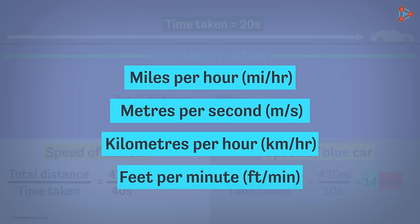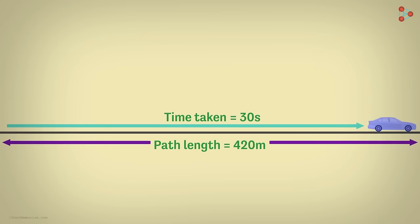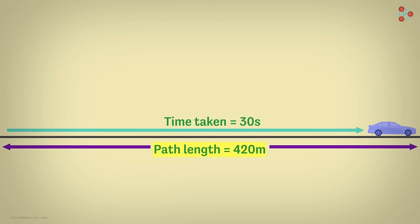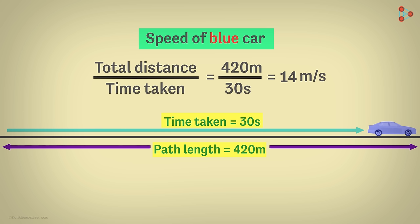Let's discuss something interesting now. Look at the example of one of the cars, say car A. The only information I gave you was that it covers 420 meters in 30 seconds. That gave us the speed as 14 meters per second.